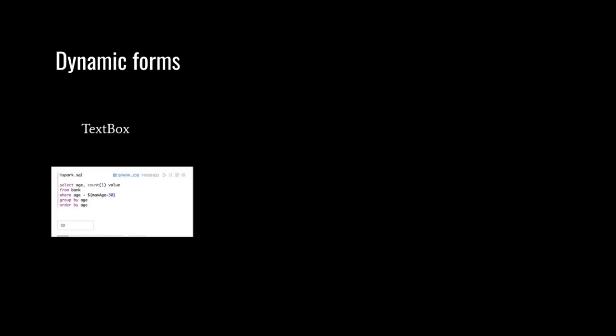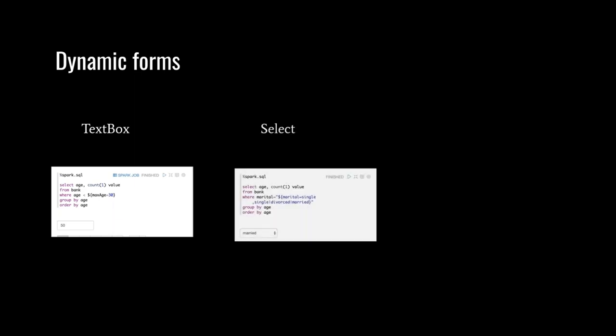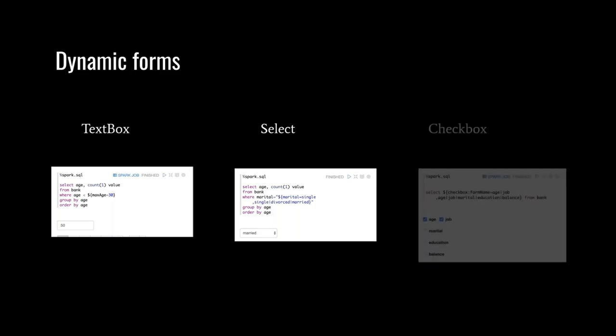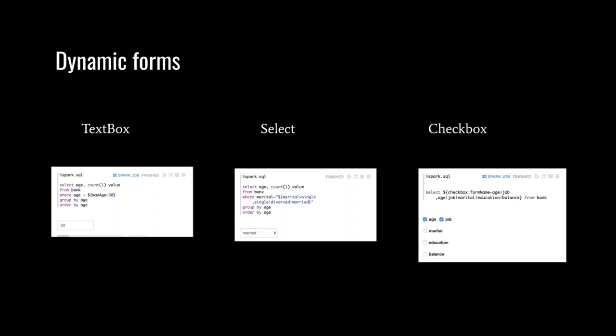The next feature is dynamic forms. Most of the time you need your program to accept parameters so that you can customize it. Dynamic forms serve this purpose. There are three main dynamic form types supported by Zeppelin: first is a text box, where a user can type input to customize a SQL statement; second is a select dropdown list; and third is a checkbox, which is similar to select.